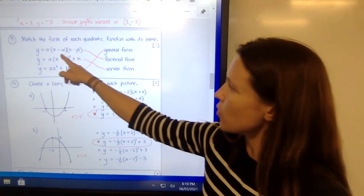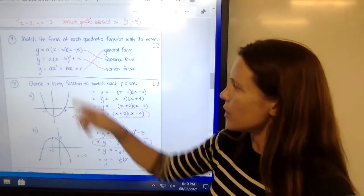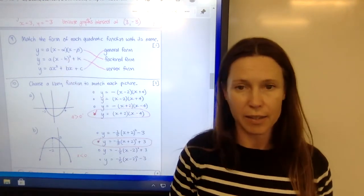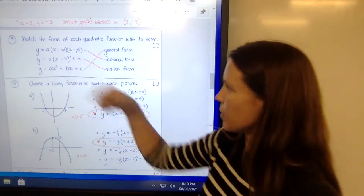And then the vertex form is this one here, and we know it's vertex form because when we have it in this form, hk is the vertex. So that's just something we need to learn.